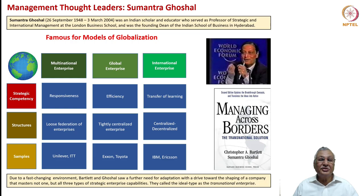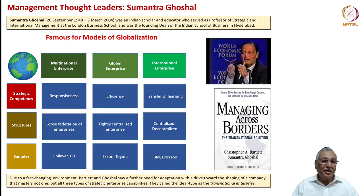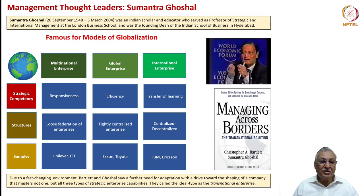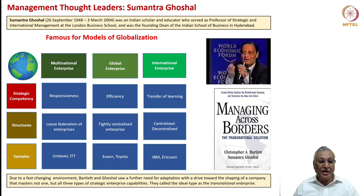Sumantra Ghoshal worked at London Business School and was also the founding dean of the Indian School of Business in Hyderabad. He was a globalization expert. He said different types of companies have different competencies, different structures, and different requirements. A multinational enterprise needs the strategic competency of responsiveness, a global enterprise needs to be efficient, and an international enterprise needs to understand the transfer of learning. A multinational enterprise tends to be a loose federation, whereas a global enterprise is a tightly centralized one, and an international enterprise is a centralized-decentralized operation.